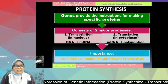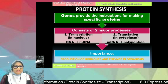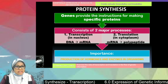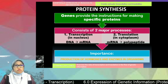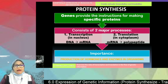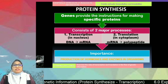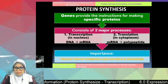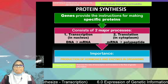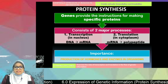Protein synthesis involves the gene providing instructions for making a specific protein. To get the gene expressed, there are two major processes. The first is transcription, which occurs in the nucleus where DNA is used as a template to produce mRNA. Then the mRNA is used as a template in a process called translation, which takes place in the cytoplasm. The code in the mRNA provides information to produce polypeptides — important for the production of hormones and enzymes in organisms.